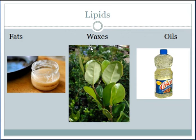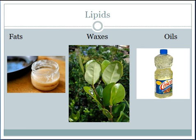Lipids can be thought of as fats, waxes, and oils. Grease off the pan for making bacon. Waxes on leaves to prevent evaporation. And the oils that we use — olive oil, vegetable oil — all make up a group called lipids.